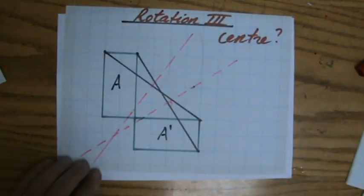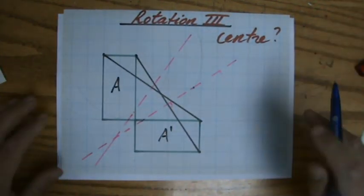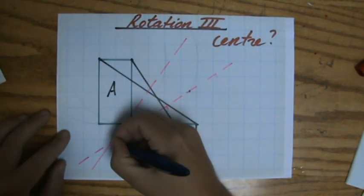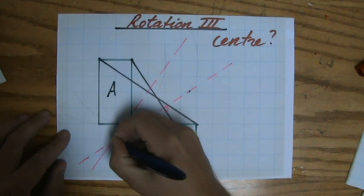Now, what is the center of my rotation? That is that intersection point of those two perpendicular bisectors. So, over here. Now, I'm going to... It's over there.